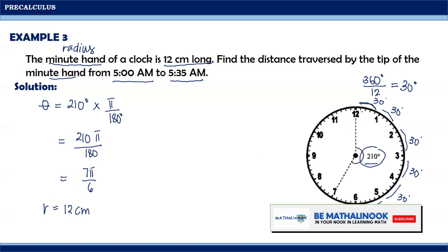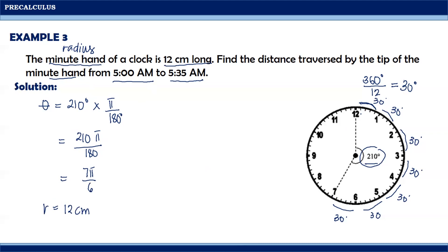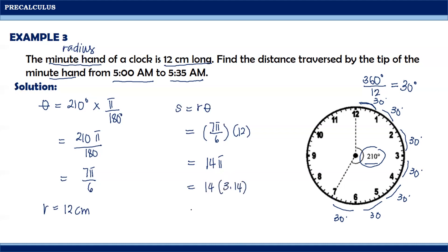The question is how long does the minute hand travel from 5 a.m. to 5:35 a.m.? Meaning, we are looking for the arc length from 12 up to 7. Using the formula s equals r times theta, we get 7 pi over 6 times 12 cm, which equals 14 pi. Changing pi into 3.14, we have 14 times 3.14, which equals 43.96 cm.